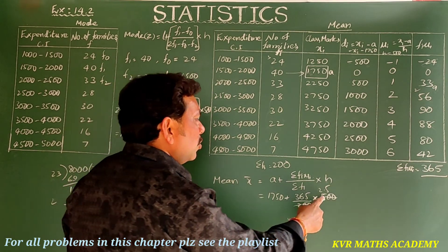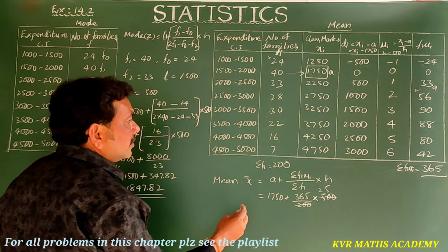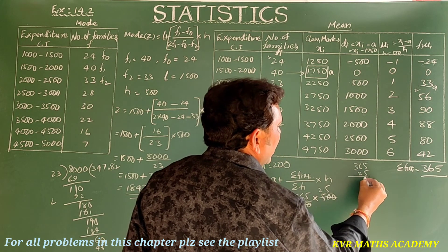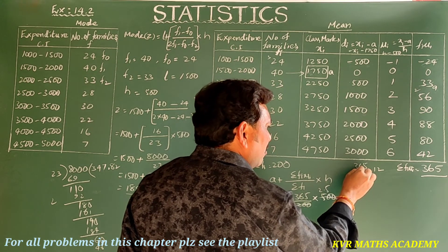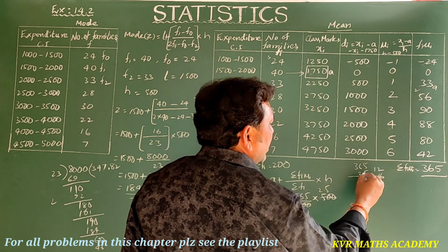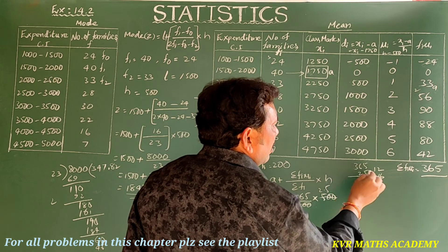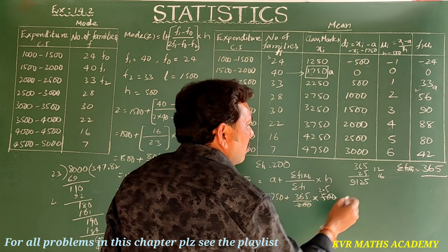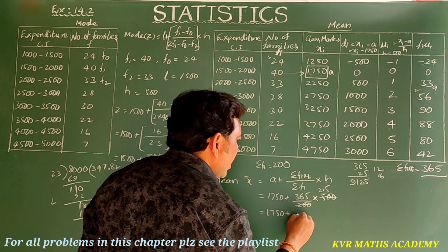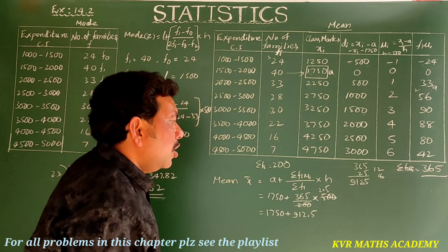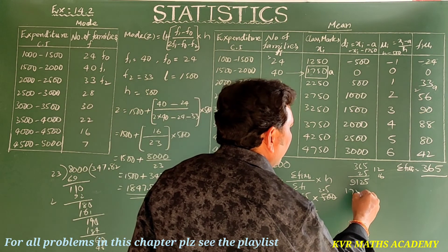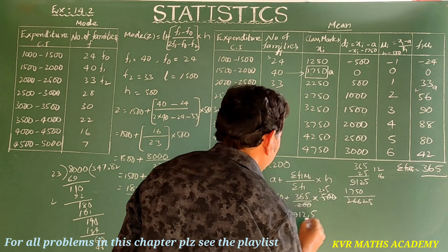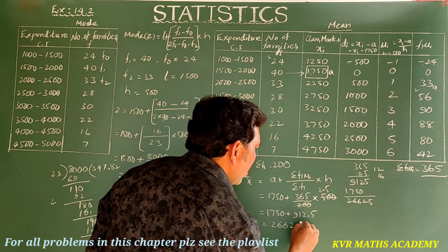So x̄ = 1750 + (365/200) × 500 = 1750 + 2.5 × 365. Computing 365 × 2500 = 912.5, so x̄ = 1750 + 912.5 = 2662.5. Therefore the mean monthly expenditure is 2662.5.